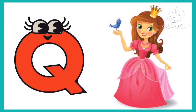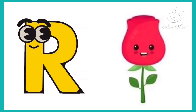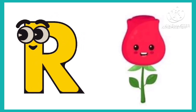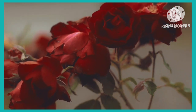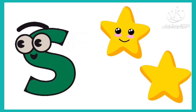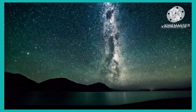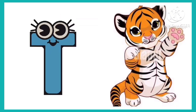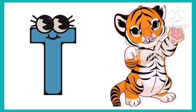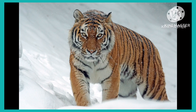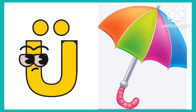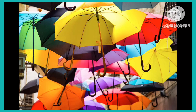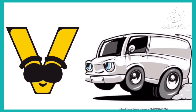P is for Parrot. T is for Tiger. U is for Umbrella. V is for Van.